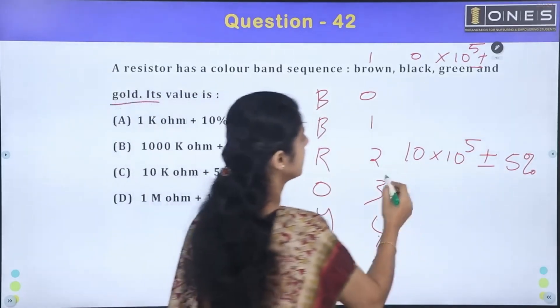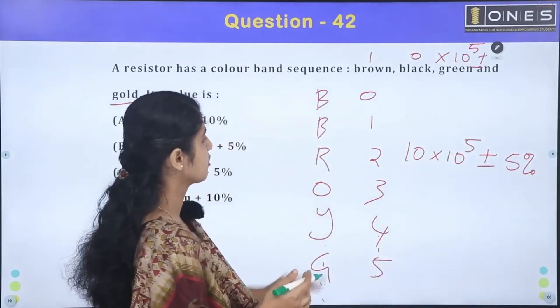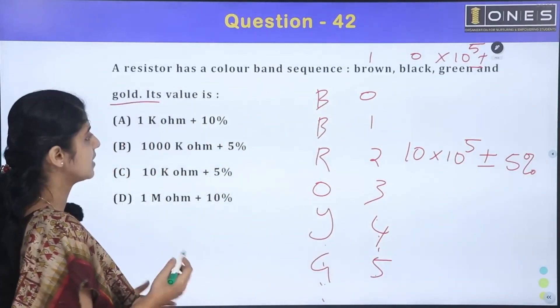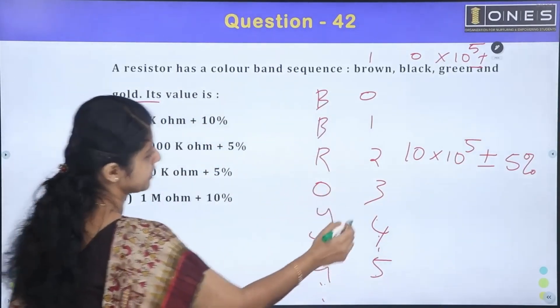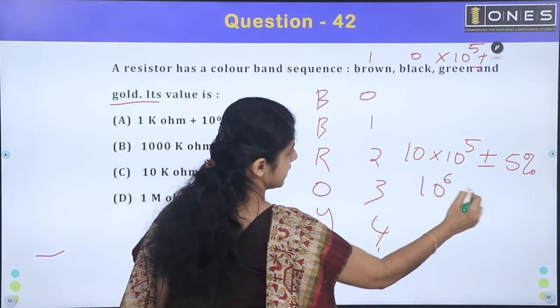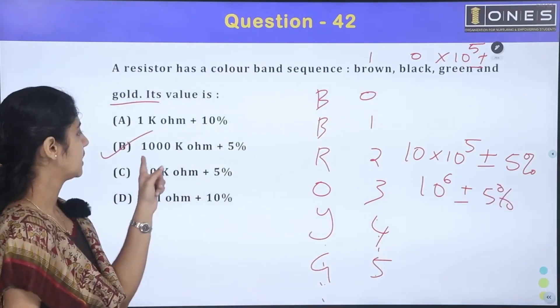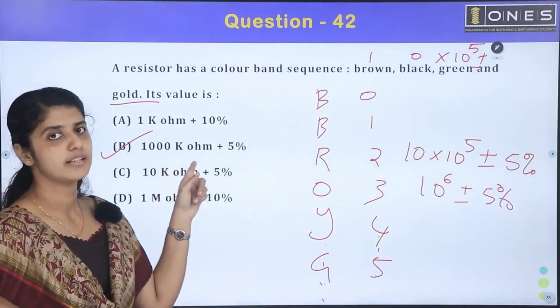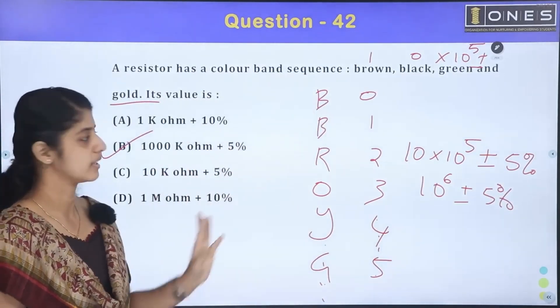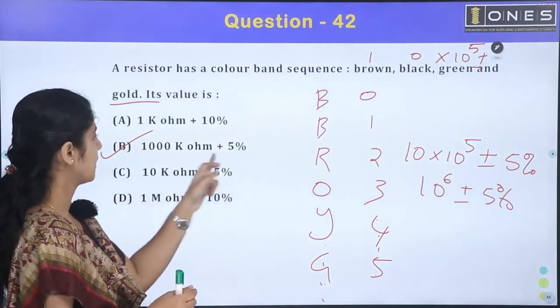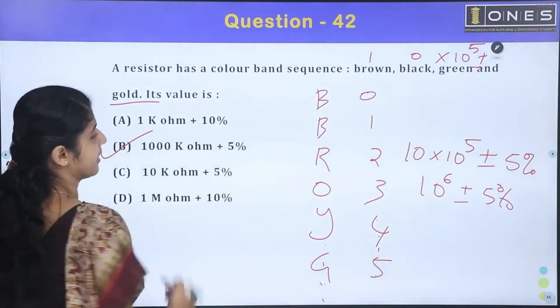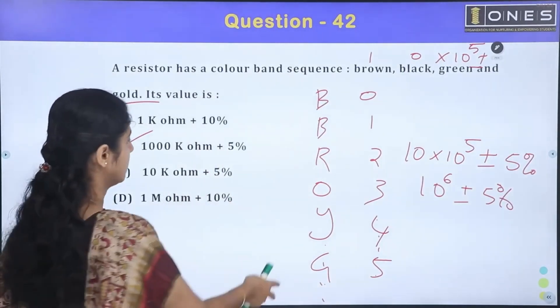Now resistance value is 10 into 10 raise to 5, plus or minus 5%. Options are 10 into 10 raise to 5, so this is 10 raise to 6, plus or minus 5%. Option B, 1000K - 1000 into 10 raise to 3, so this is 10 raise to 6, plus or minus 5%.